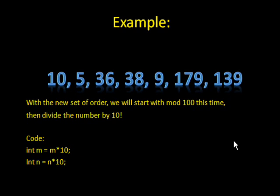So now, as we continue, we are going to multiply m by 10 and multiply n by 10. What this means is that we are going to start modding each number by 100, which will give us a remainder of between 0 and 99. But that's going to be a two-digit number — we only want the second digit, not the number in the ones column, we want the tens column. So if we divide that number by 10, we would get the number we want, if we convert it to an integer.